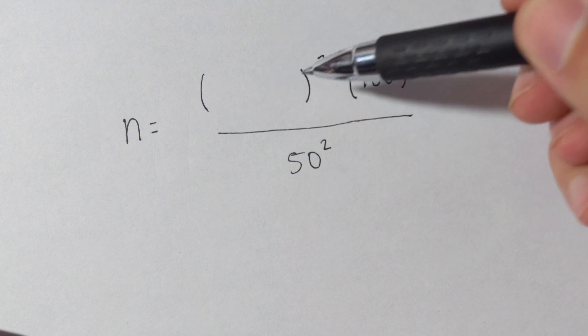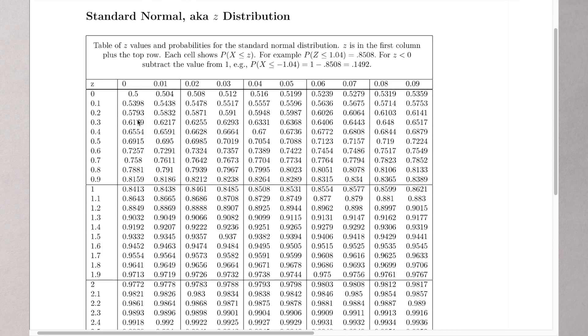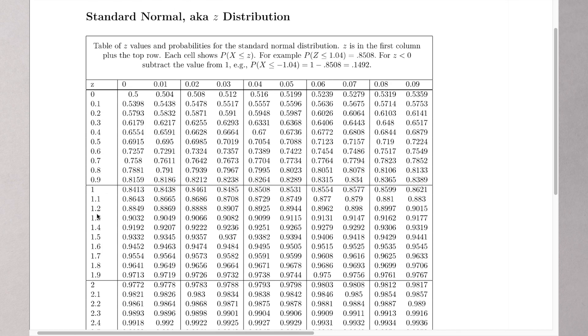And remember I said we'd come back to here. So I found this z table here on the internet, and here you just find the z value on the side and then on the top, and then you get the probability that it's associated with that z value. And remember, we're looking for a z value that is associated with alpha over 2. So in our case, we want to be 95% confident.